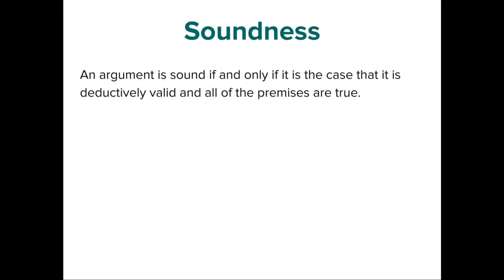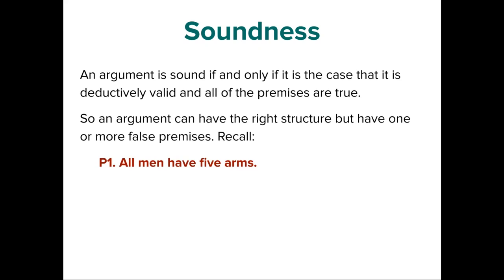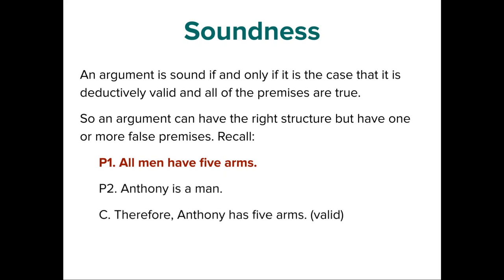If we have a deductively valid argument and all the premises turn out to be true in the world, then it is called a sound argument. Here's an example of a valid but unsound argument: Premise 1 — all men have five arms; Premise 2 — Anthony is a man; therefore Anthony has five arms. This is deductively valid because if those premises were true, the conclusion would have to follow. But it is unsound because premise one is obviously false.